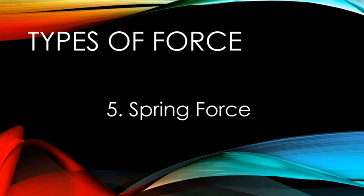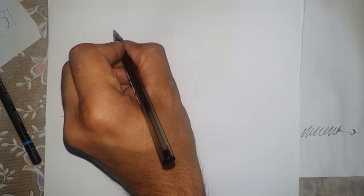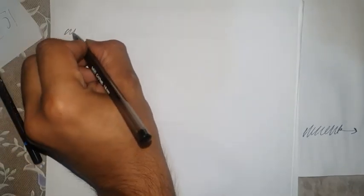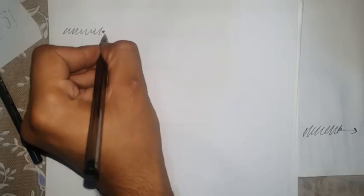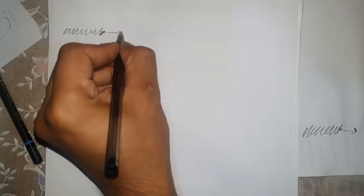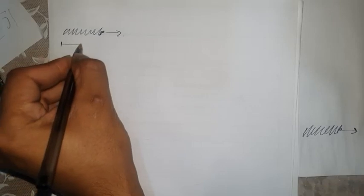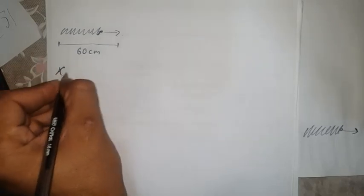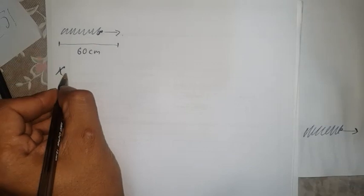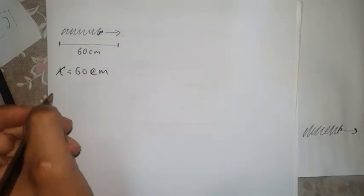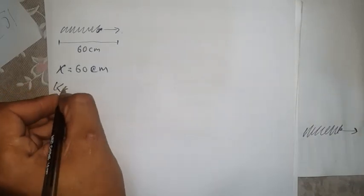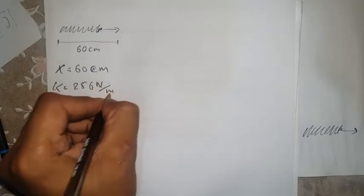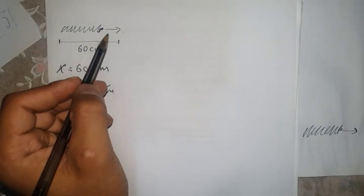Here we have an example: we have a spring, and we are putting a force on it and pulling it from one position to another. The distance from the initial to the final position is 60 centimeters. The spring constant is given as 256 newtons per meter, and the force is unknown — we need to find how much force is required to pull the spring to that point.